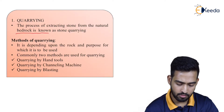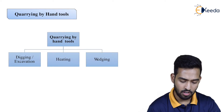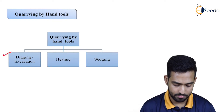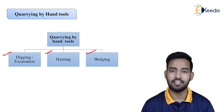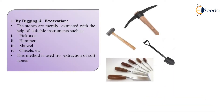For quarrying by hand tools, the first operation is digging or excavation, then hitting, and then wedging. For digging or excavation, the stones are extracted using traditional tools such as picks, hammers, shovels, or chisels. This method is used for extraction of soft stones, generally used for soft strata.